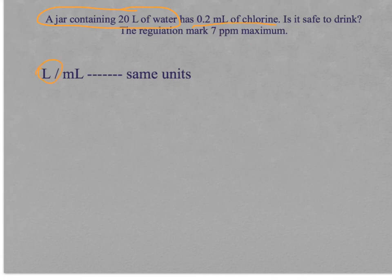First of all, as you can see, we have different units. We have liters and milliliters. Both are volume units, but we need to have the same. So you can choose to transform liters into milliliters and have both volumes as milliliters or the other way. Transform these milliliters into liters.